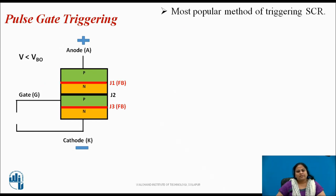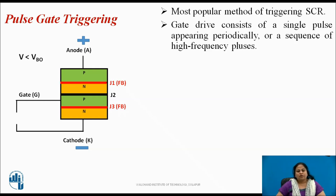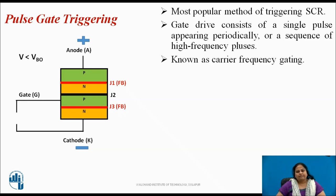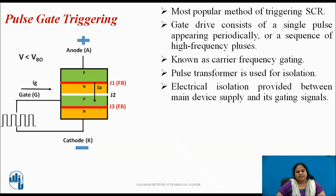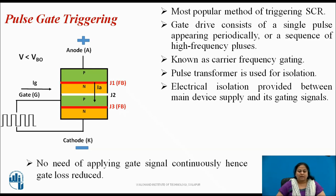Pulse gate triggering is the most popular method used to trigger the SCR. In this, gate drive consists of a single pulse appearing periodically or a sequence of high-frequency pulses, known as carrier frequency gating. A pulse transformer is used for isolation, providing electrical isolation between the main device supply and its gating signals. The main advantage is that there is no need to apply the gate signal continuously, hence reducing gate loss.